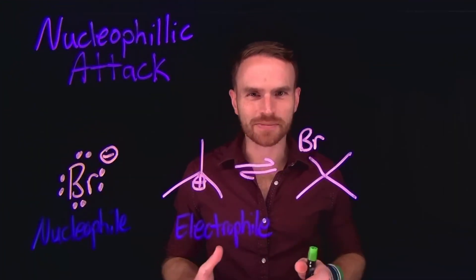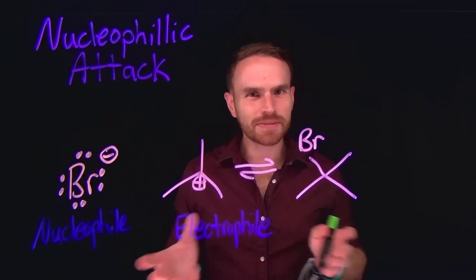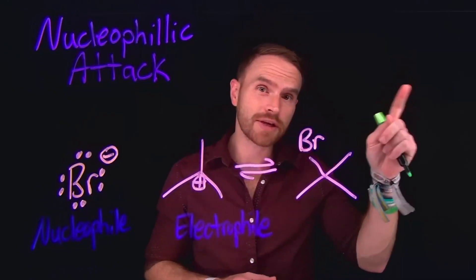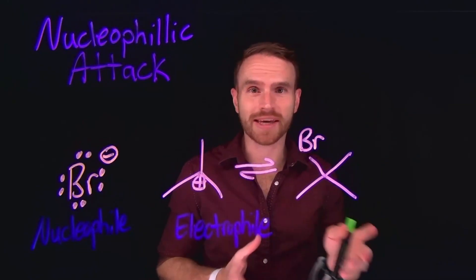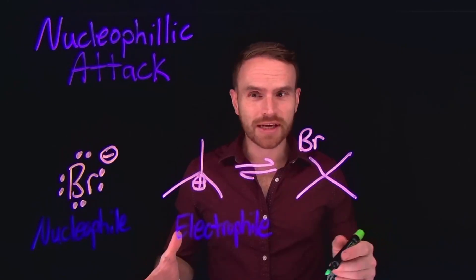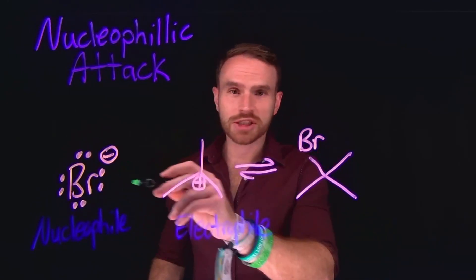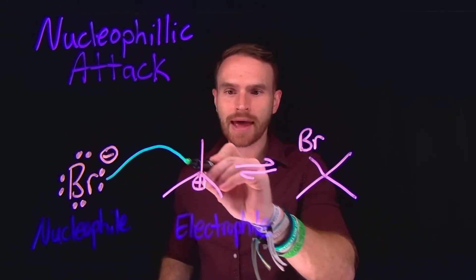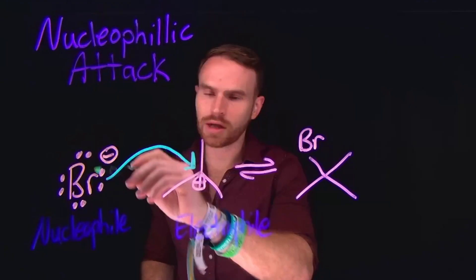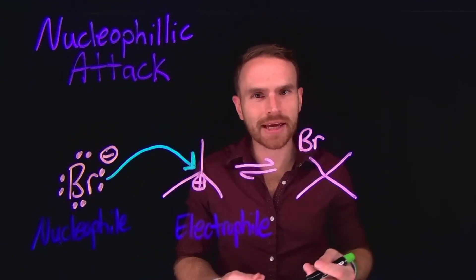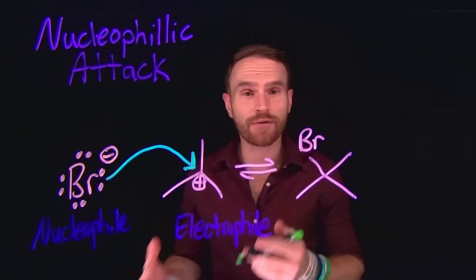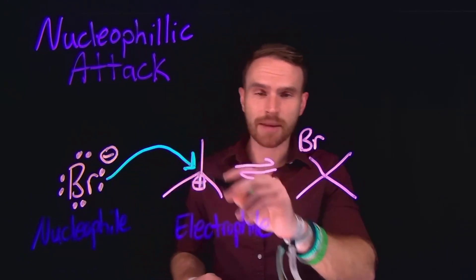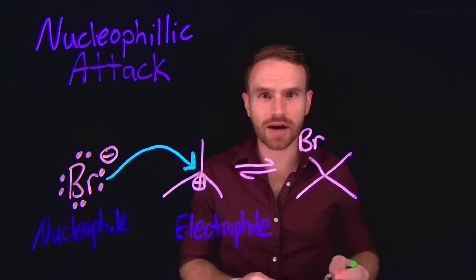The first pattern for mechanisms is going to be nucleophilic attack. This mechanistic pattern relies on your understanding of nucleophiles and electrophiles. In nucleophilic attack, a nucleophile, which is attracted to a nucleus or positive charges, is going to attack electrophiles with either electrons, bonds, or negative buildup of charge where we can find electrons. These electrostatic attractions between negatively charged particles and positively charged particles is what drives this reaction.